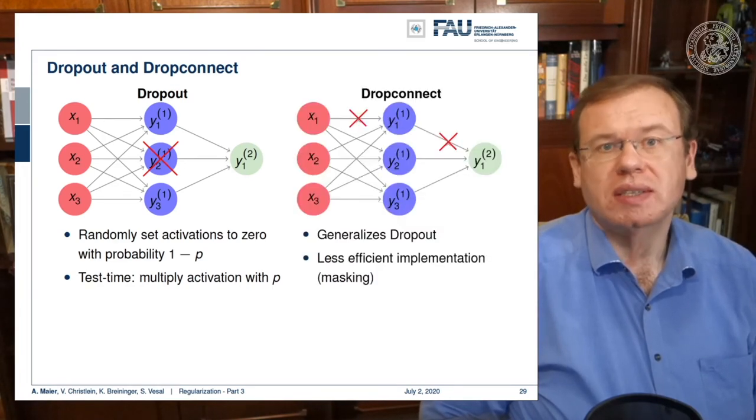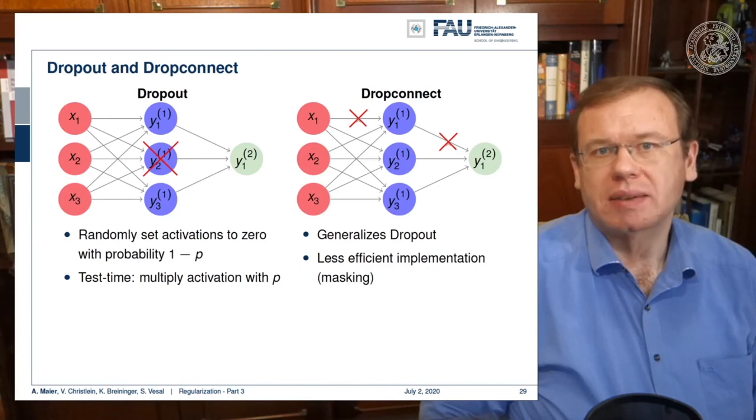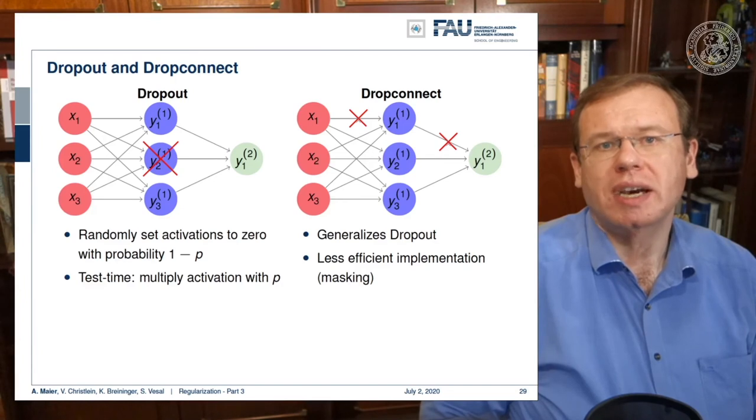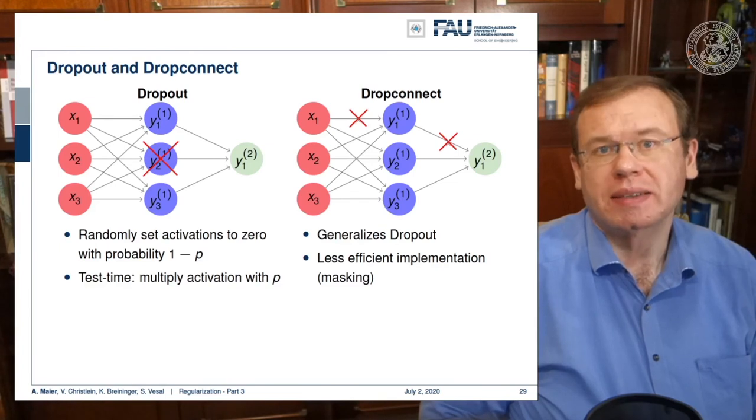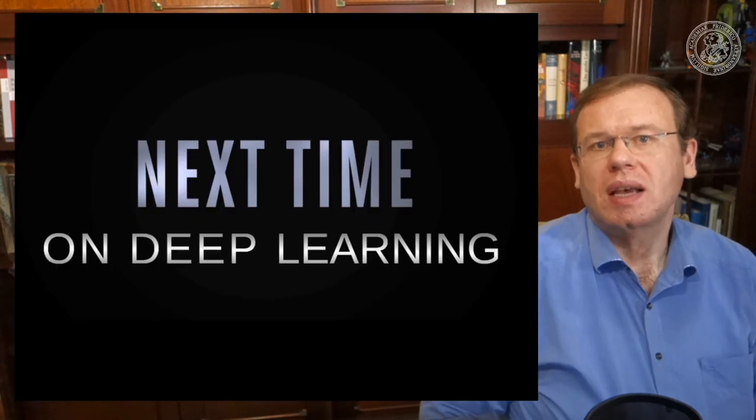Also interesting is a generalization that is drop connect. Here you don't kill all of the activations of an individual neuron, but you kill some of the individual connections. So you randomly identify those connections and set them to zero. This could be seen as a generalization of dropout because you do have more different ways of adjusting it. Typically, the implementation is not as efficient because you have to implement this as masking. It's simpler just to set one of the activations to zero.